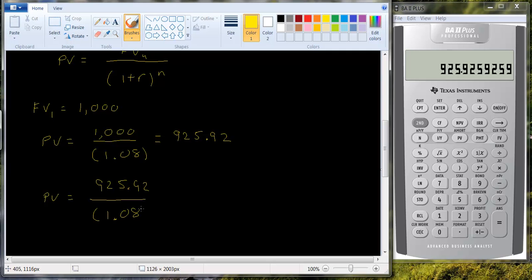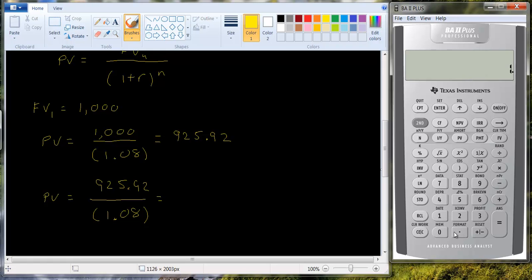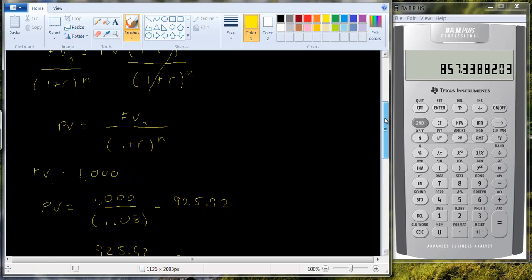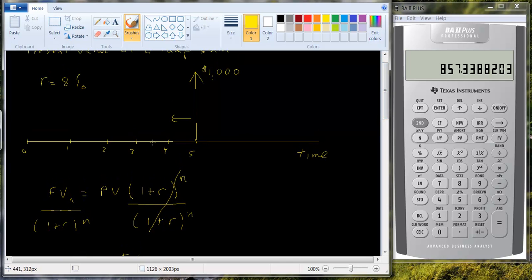Because this is the present value in year four for the year five cash flow. If we bring it back one more period, we're moving again. And so we can divide this by one point zero eight. And so now we get eight fifty seven thirty three. I'll keep going back to my little picture here. And so we bring it back another period.